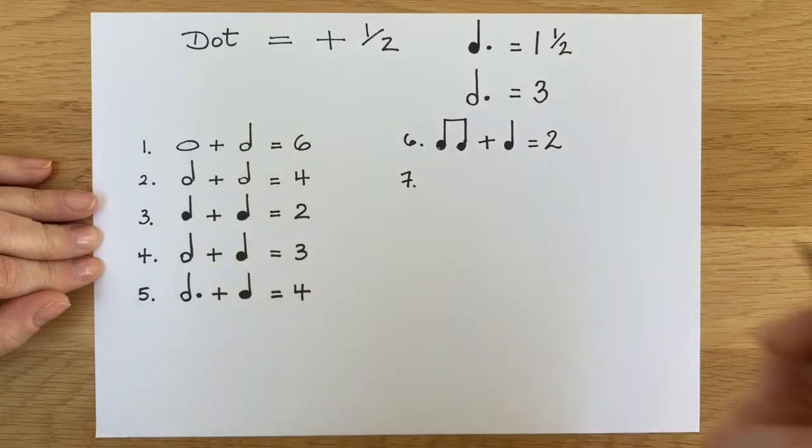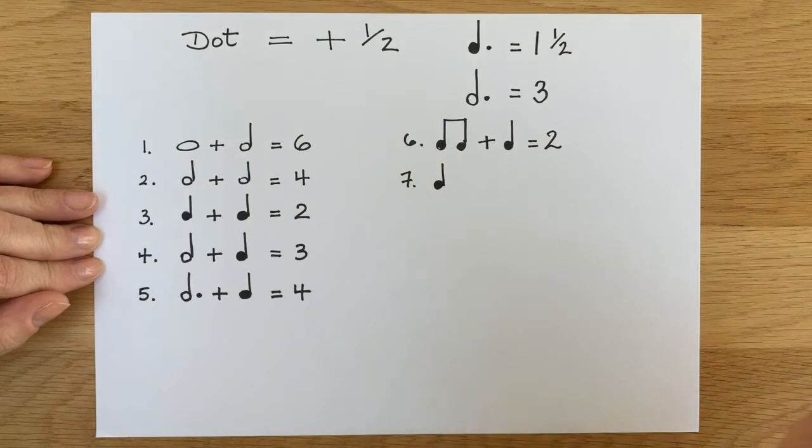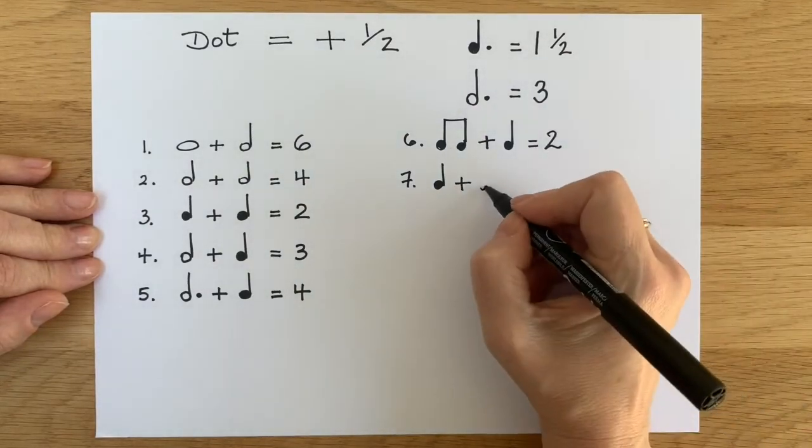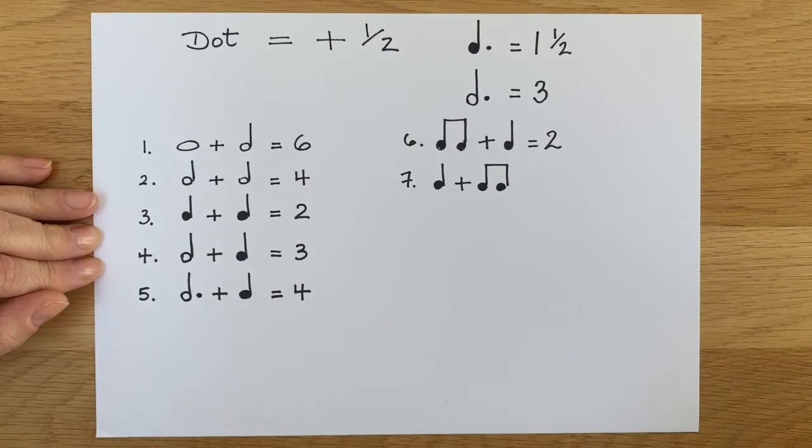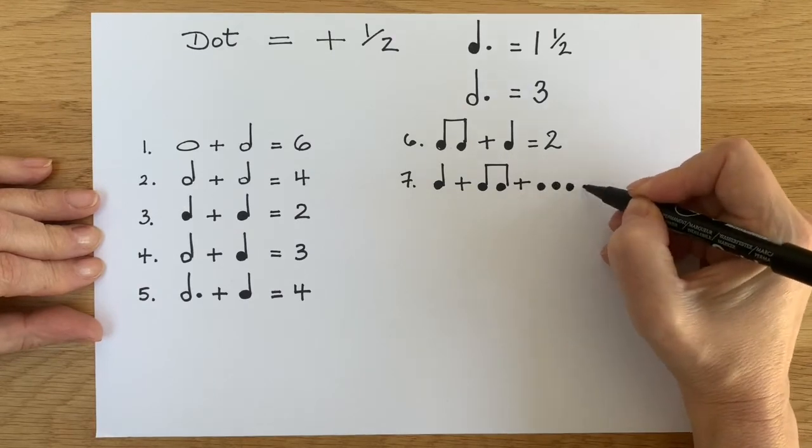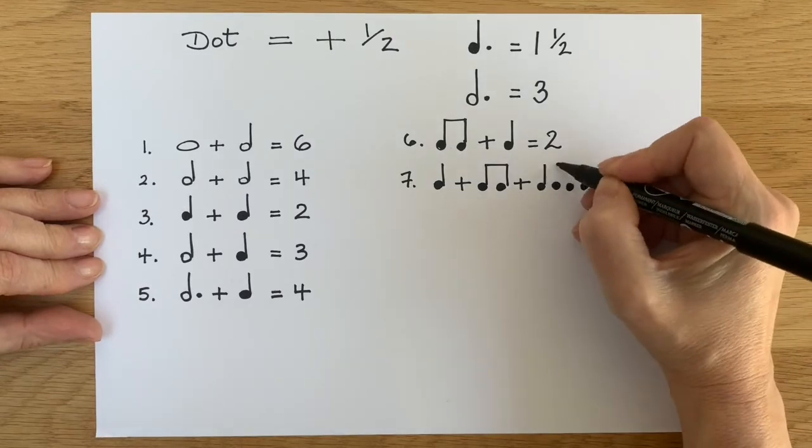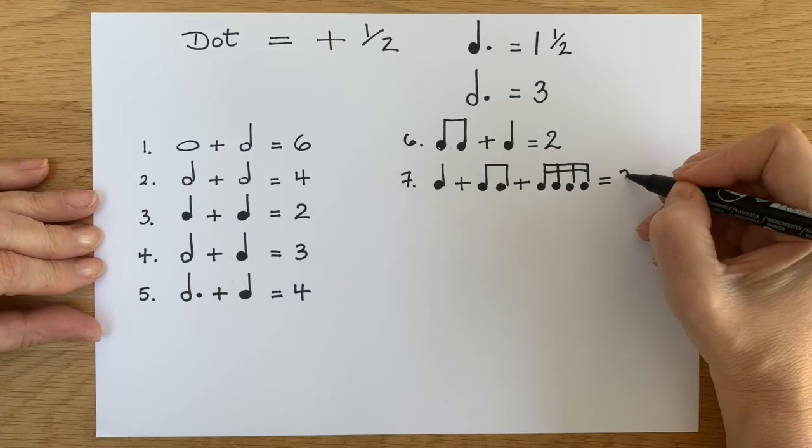Number seven. If there was a crotchet plus two quavers. Remember to join them up when you write them, the two quavers. They've got two lines, remember? Right. What's the total? Three.